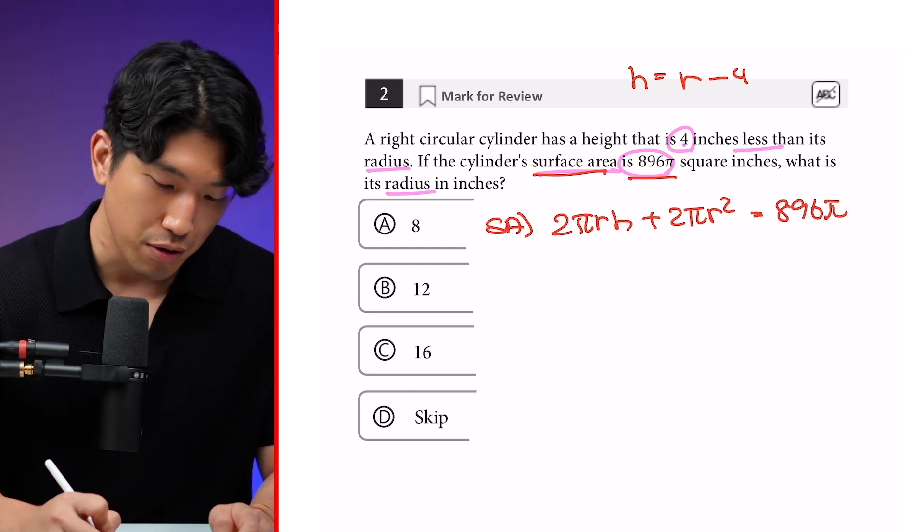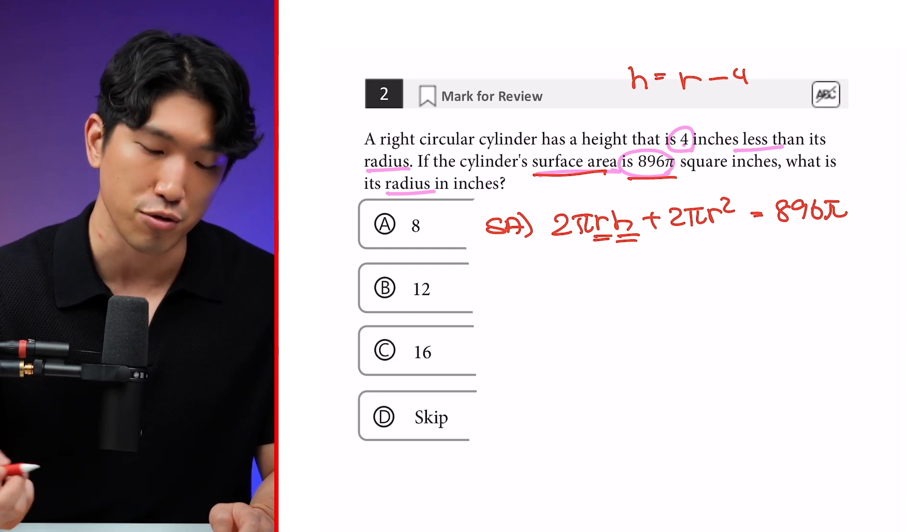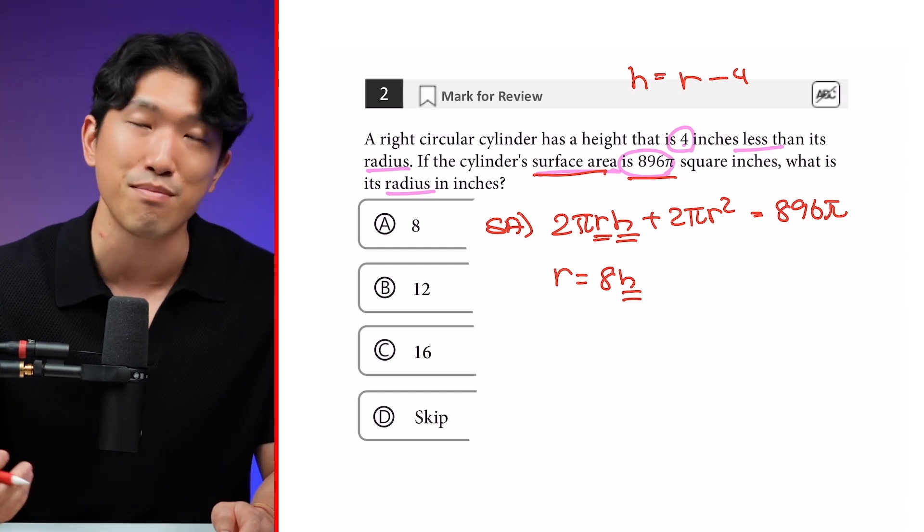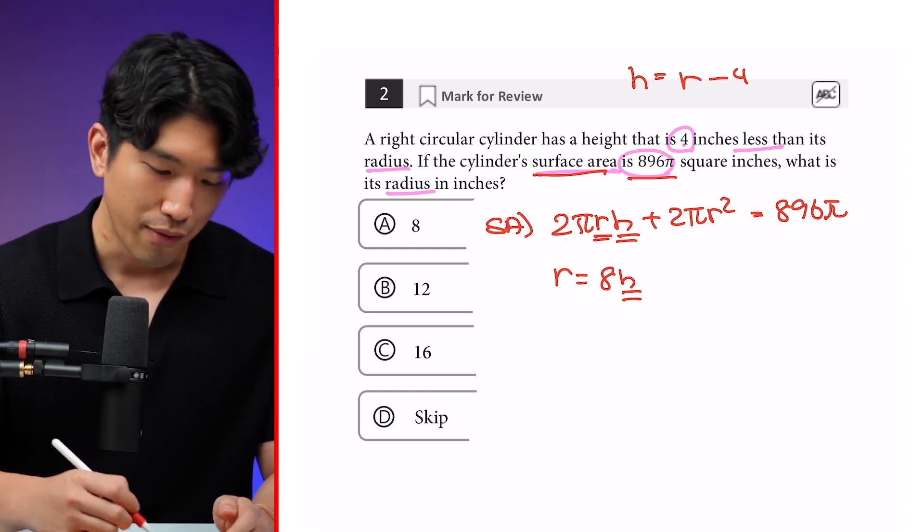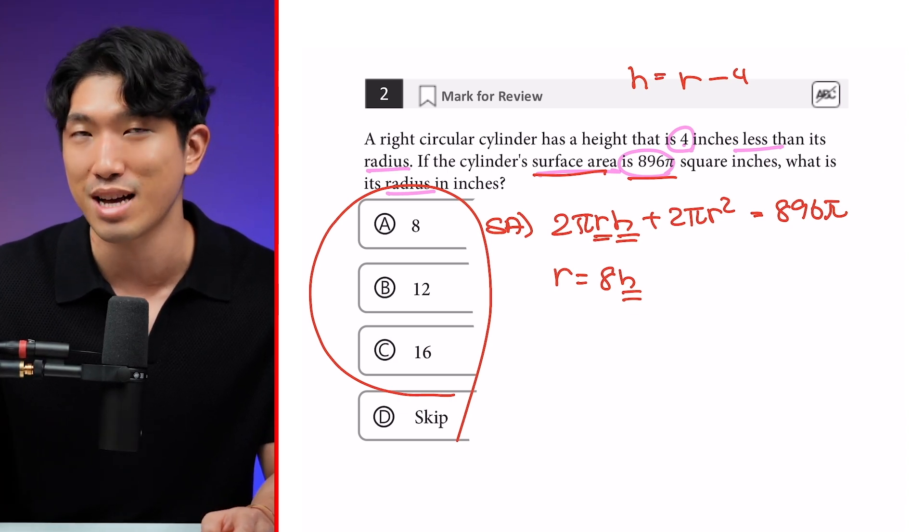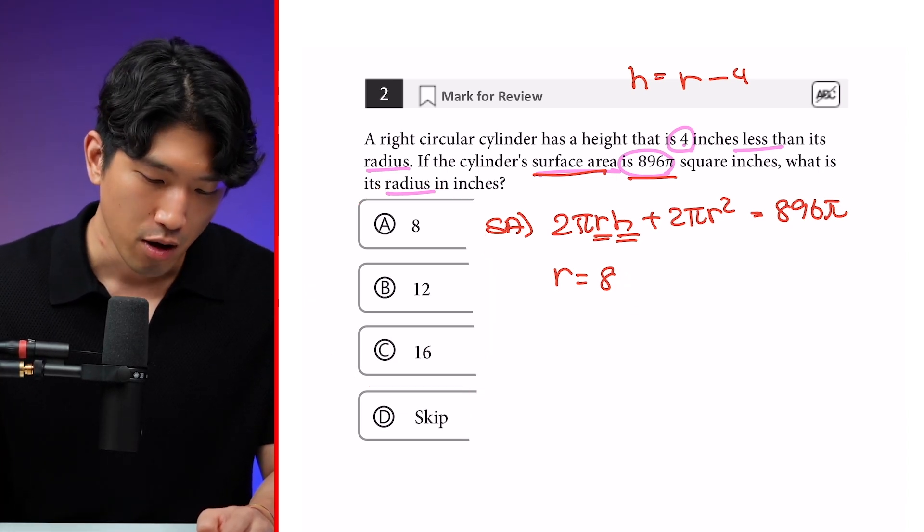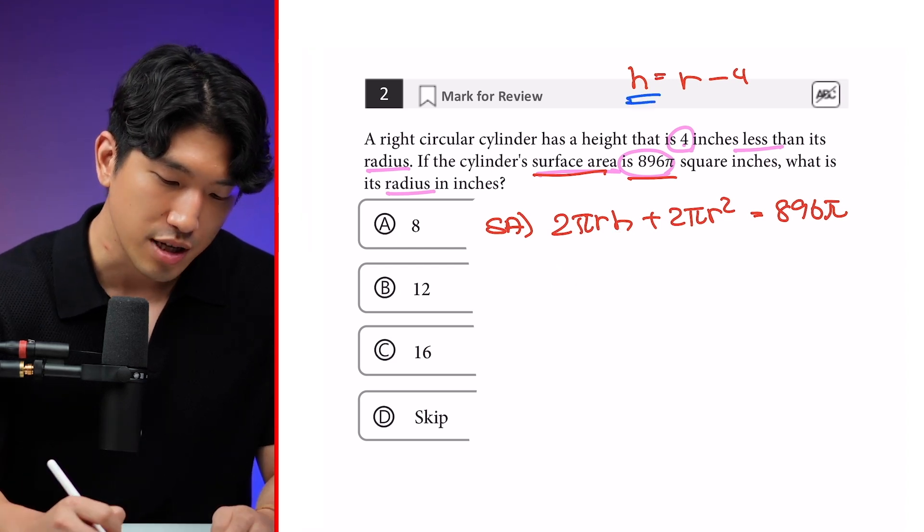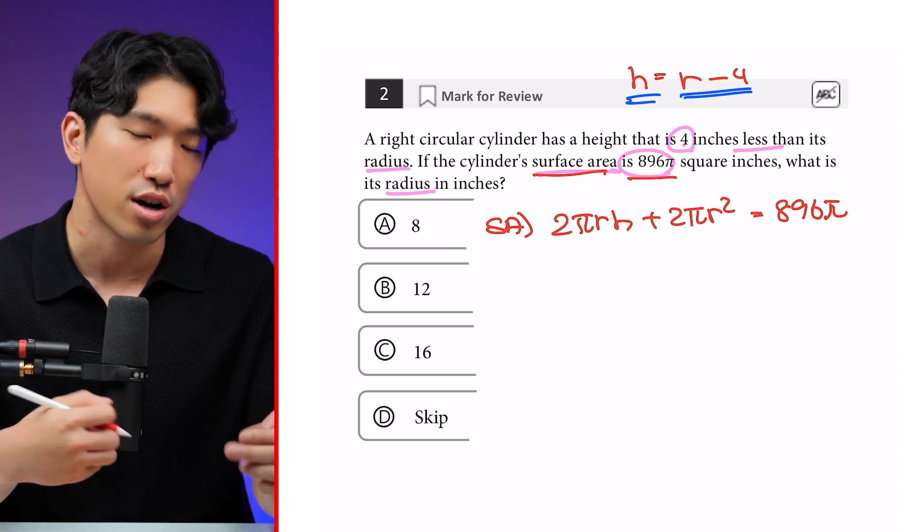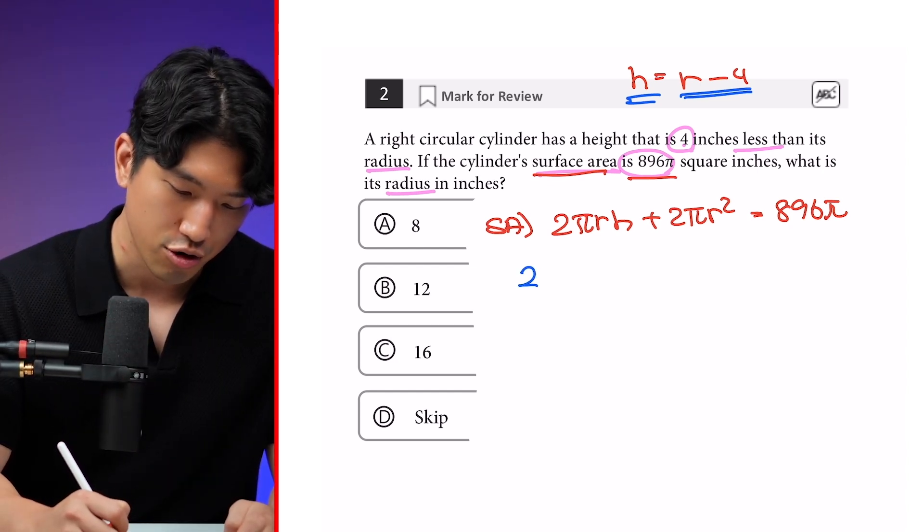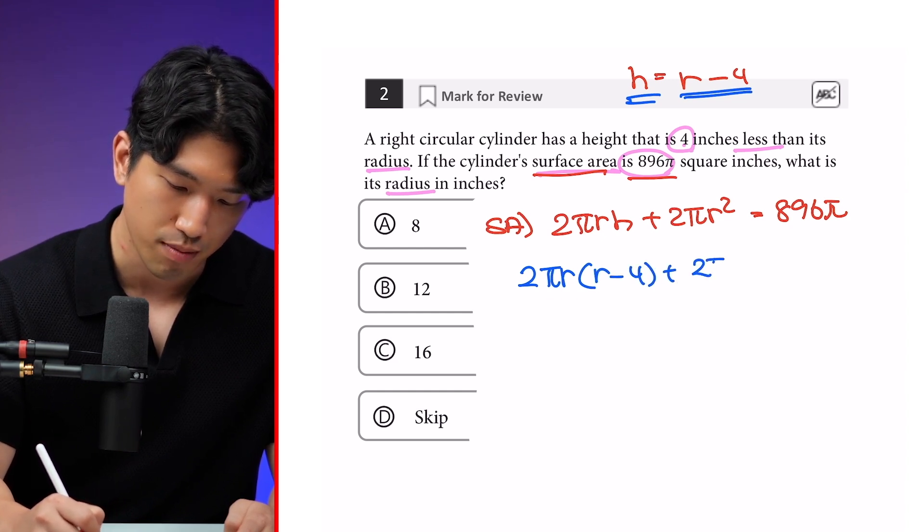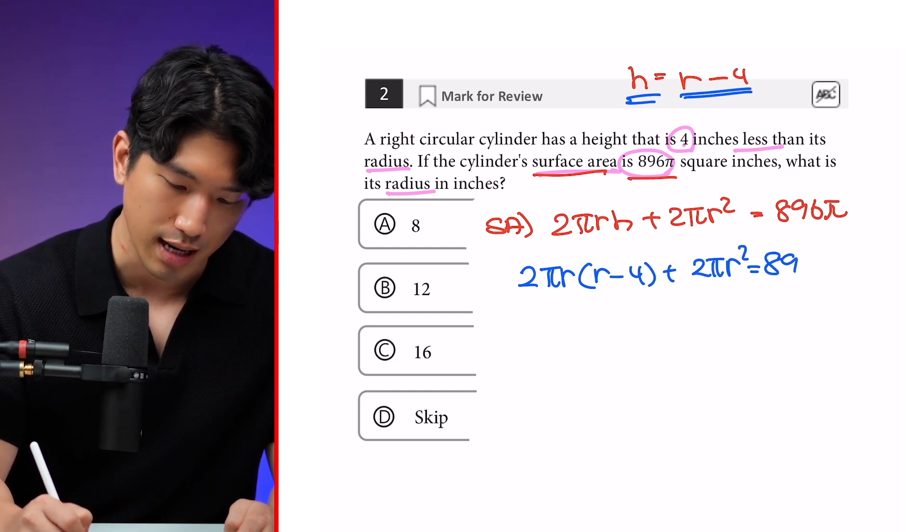So the question tells us that the height is 4 inches less than the radius. So our height is going to be r - 4. And it tells us the surface area is 896π. And the surface area formula for a cylinder is going to be 2πrh + 2πr². And that's going to equal to 896π. So in our equation, we currently have two unknown variables, which means if we isolate for r, we're going to have an h at the end. And how can we get rid of it? Well, the question tells us that h is actually equal to r - 4.